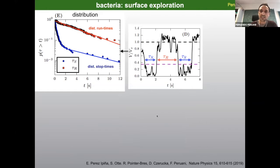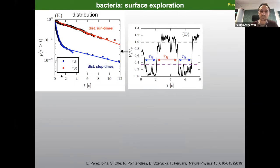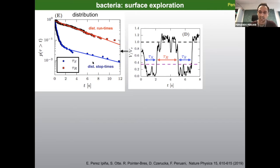We want to study the statistics of these times. This panel shows the statistics of run times and stop times in a log-linear cumulative distribution. For example, any point on the stop-time curve gives you the probability of observing a stop time larger than or equal to the value on the x-axis. The runtime can be described reasonably well with a straight line, meaning it is exponential. But the distribution of stop times is not a straight line — it is not exponential.